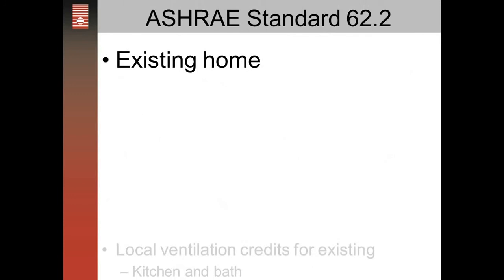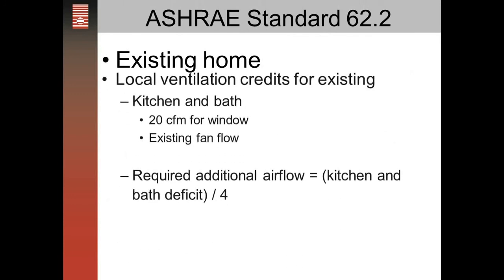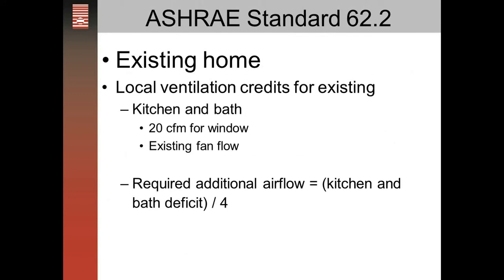For an existing home, you can take credit for existing fans you have for local spot ventilation. For a kitchen or a bathroom, if you have an operable window you can take a 20 CFM credit. If you measure the existing fan flow, you can take credit for that also.